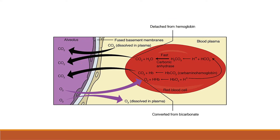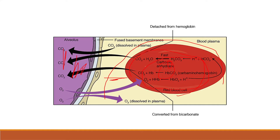Now I will show you a picture of the alveolus. In this diagram, this is blood, containing plasma and blood cells — RBCs. This is carbon dioxide moving out, and this is oxygen entering. The alveolus is the site of this gas exchange.